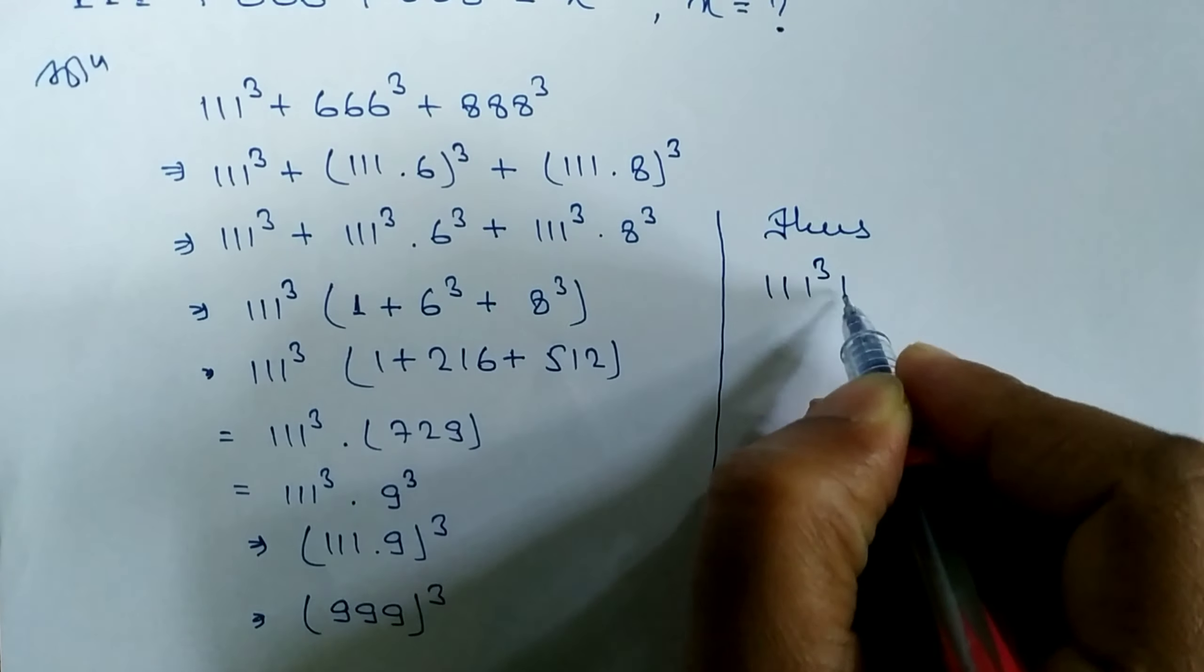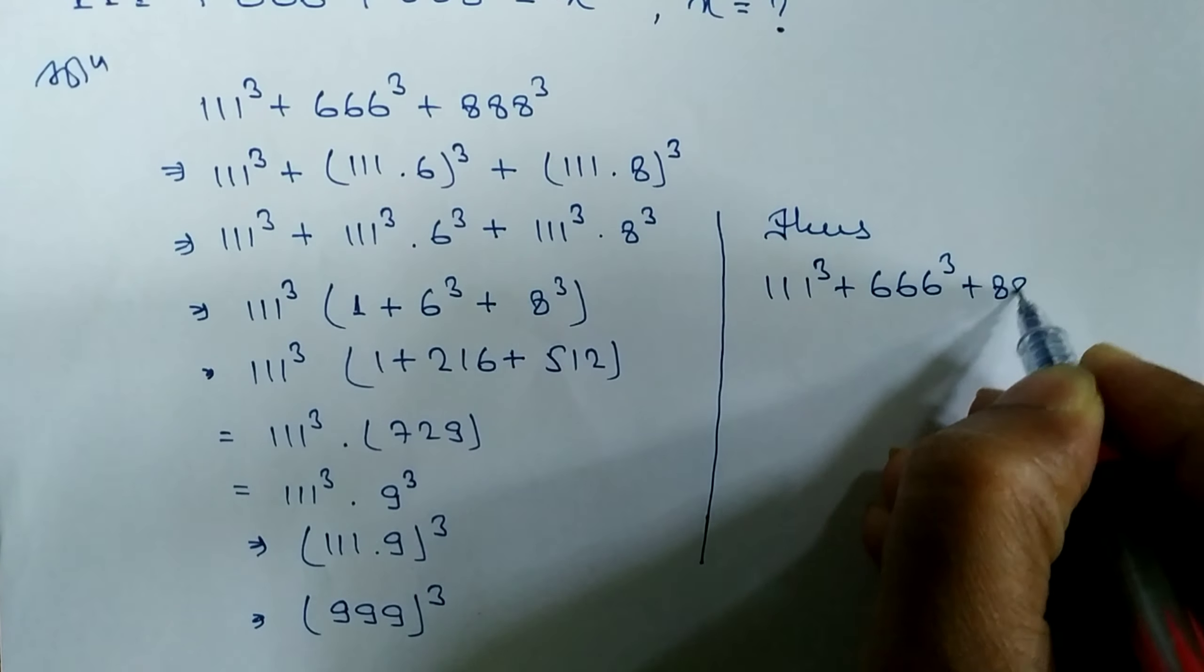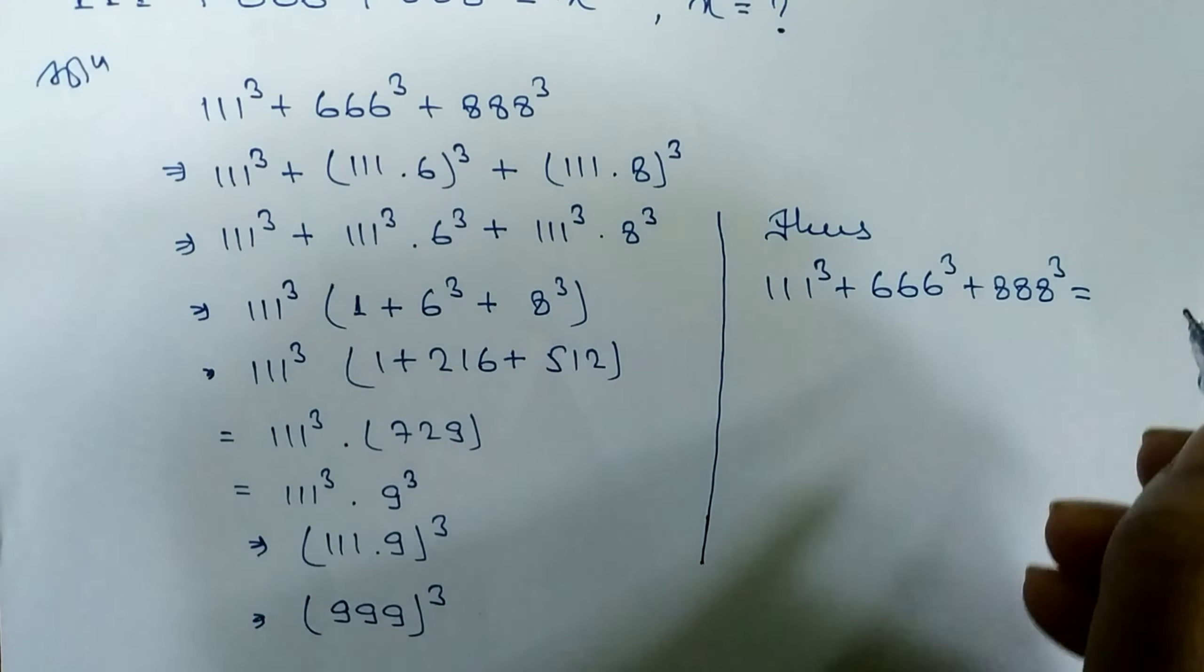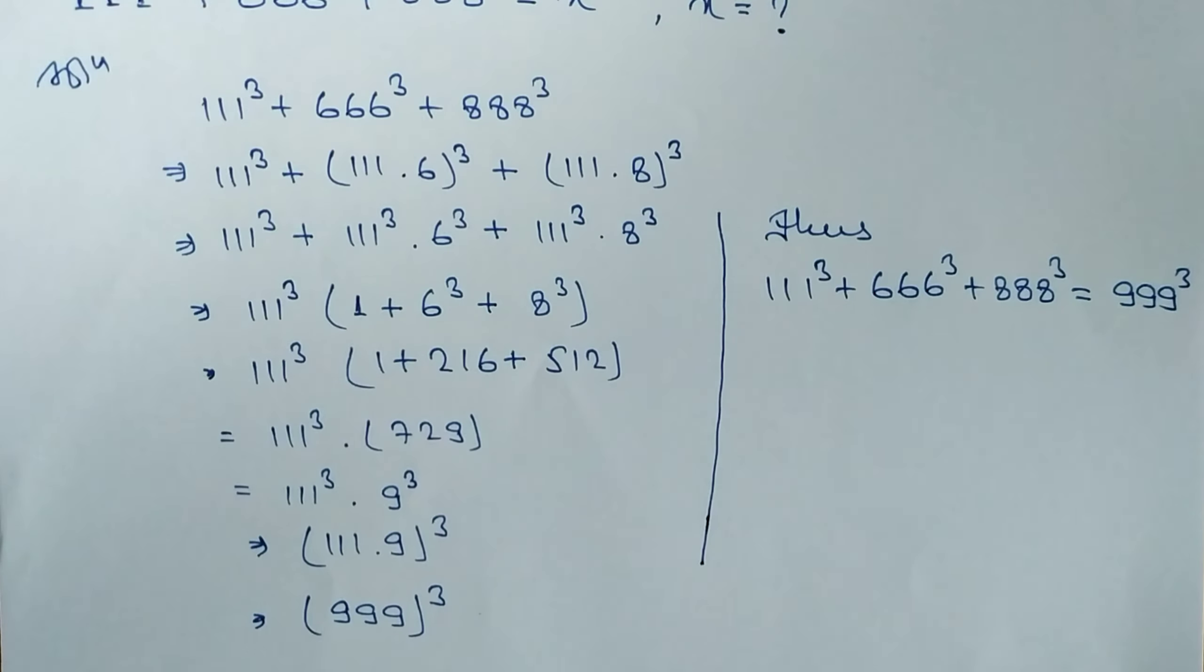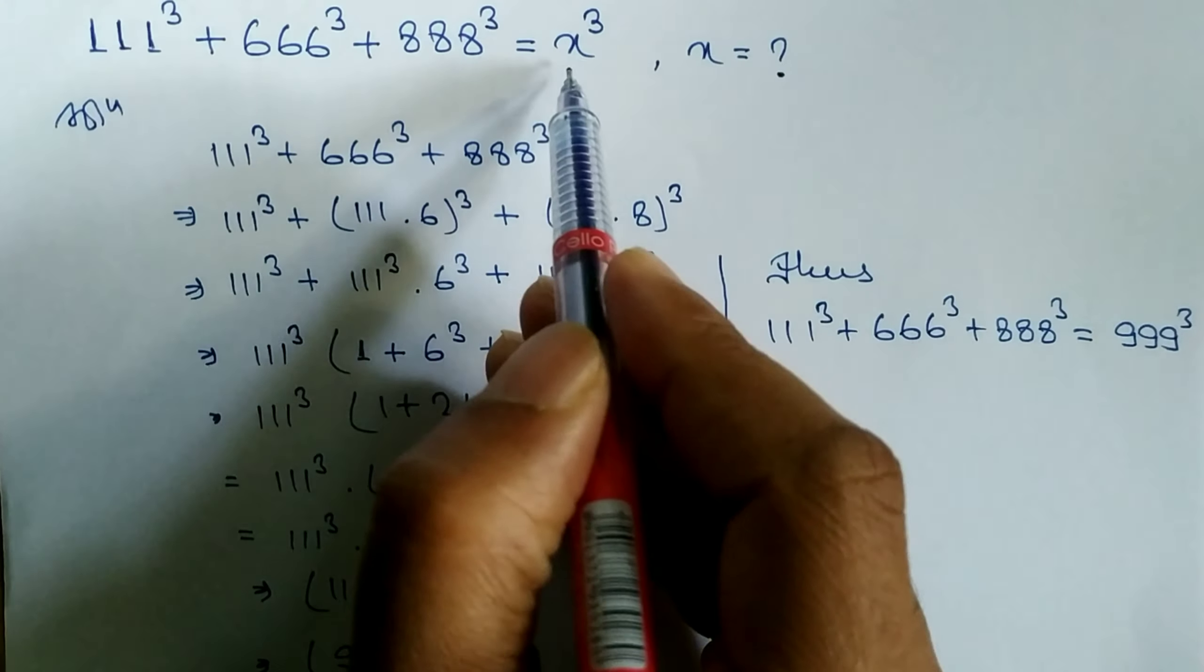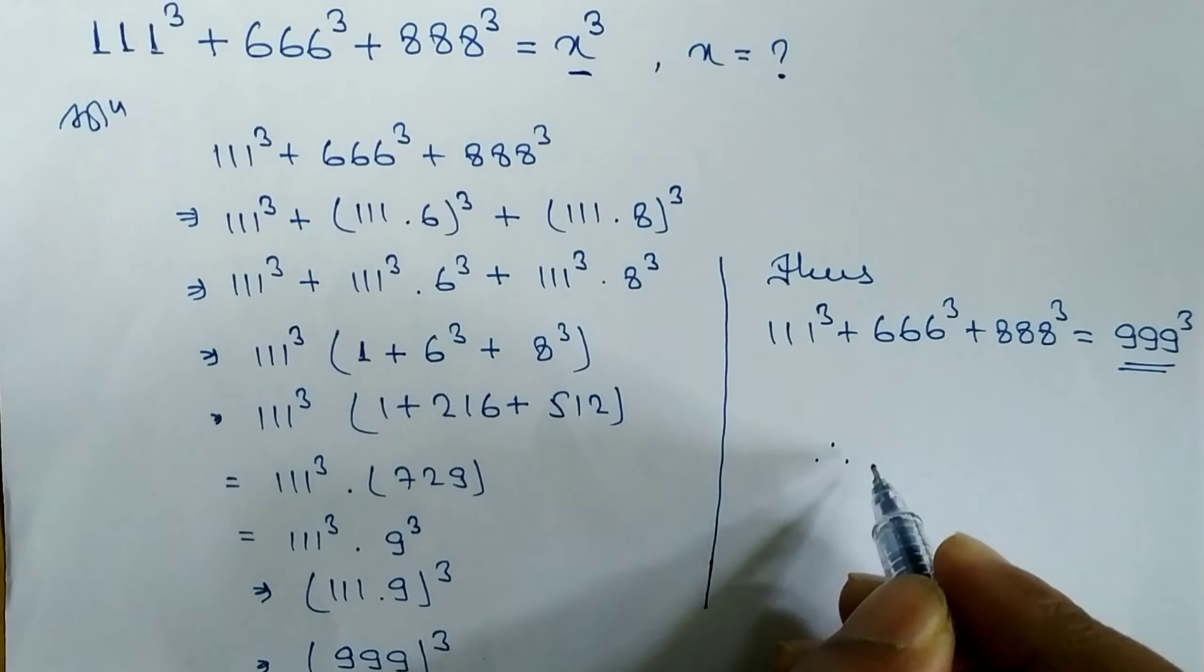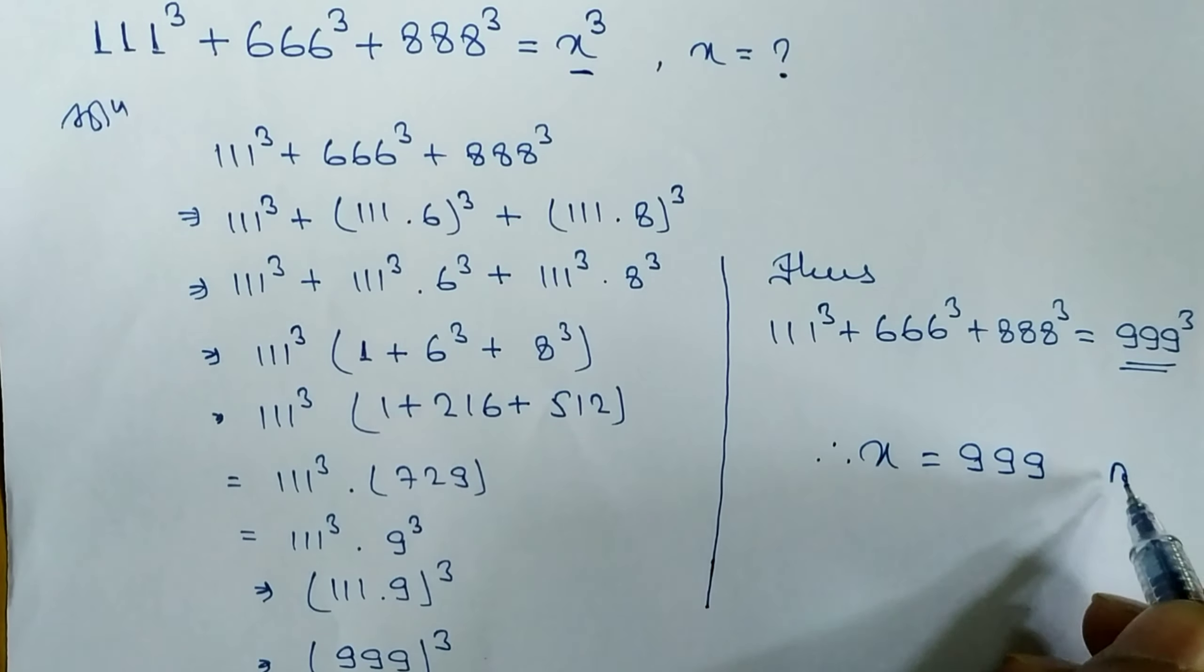We get here 999³. And when we compare this by the original equation which is given here, so in the place of x what we get here? 999. Therefore, the value of x is equal to 999. This is the answer.